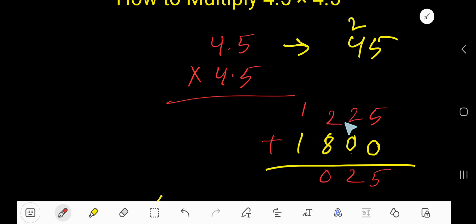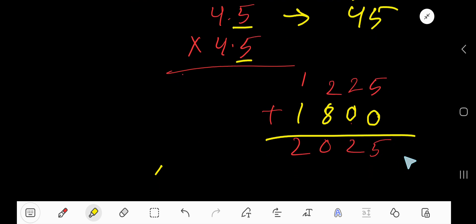1 plus 1 equals 2. We are getting 2025, but look, after the decimal we have here one digit and here one digit. Totally we have two digits. Now you have to place decimal to this product.